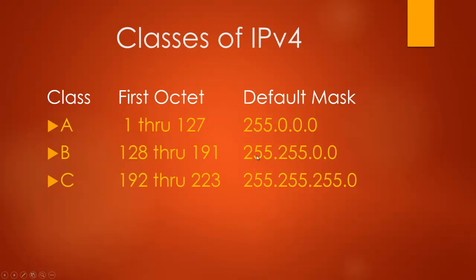With class B, it's 128 through 191, with a default mask of 255.255.0.0, meaning we can only make changes in the last two octets. And then class C, 192 through 223, meaning we can only make a change in the last octet. You may see your subnet mask written in slash notation. Slash notation just says instead of writing out 255.255.255.0, I just write /24 because there are 24 ones in the subnet mask. So /8 for class A, /16 for class B, and /24 for class C.